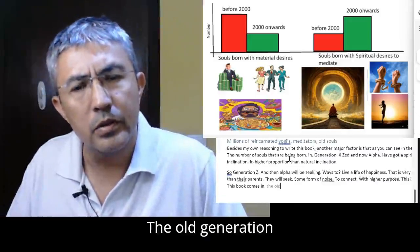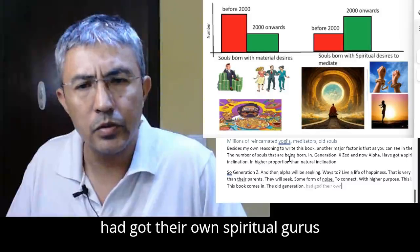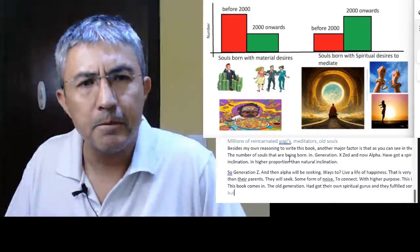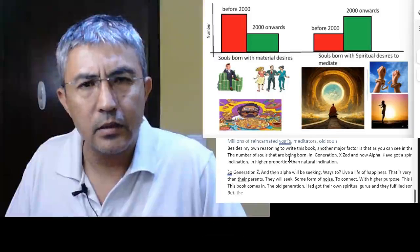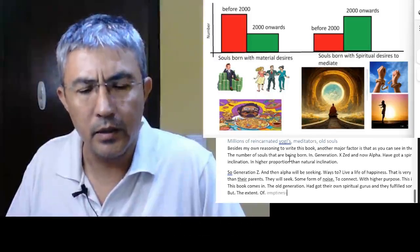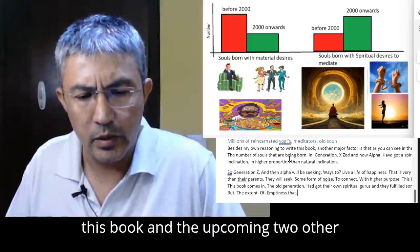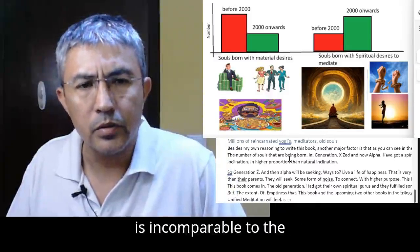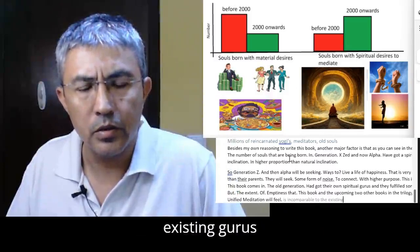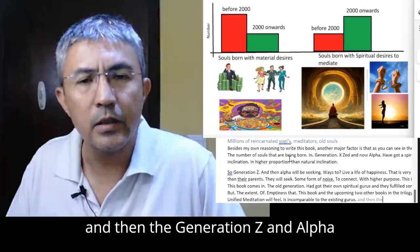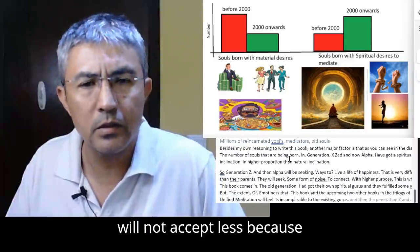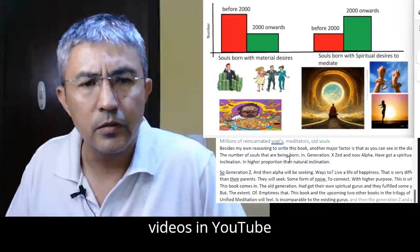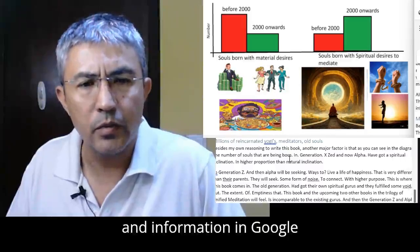The old generation had got their own spiritual gurus and they fulfilled some void. But the extent of emptiness that this book and the upcoming two other books in the trilogy of Unified Meditation will feel is incomparable to the existing gurus. And then the generation Z and Alpha will not accept less because they have been so much exposed to the great videos in YouTube and information in Google.